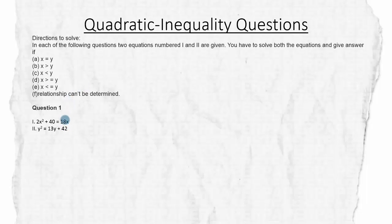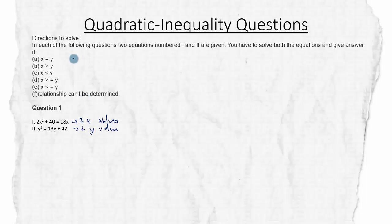In any quadratic equation or quadratic inequality question, we get two quadratic equations: one in terms of X and another in terms of Y. We are expected to solve both equations to get two values of X and two values of Y. Then we are asked to relate the values between X and Y and select the right answer from the given options.